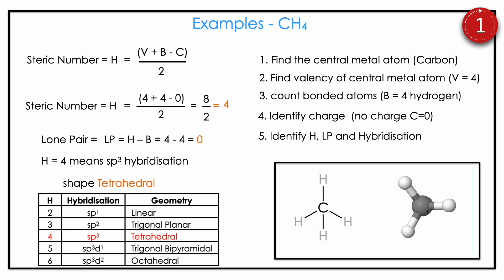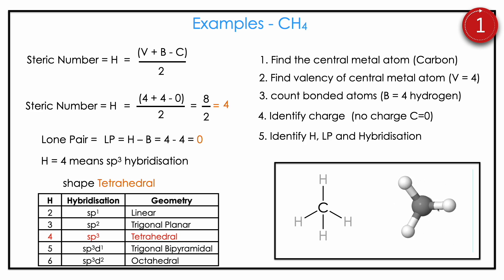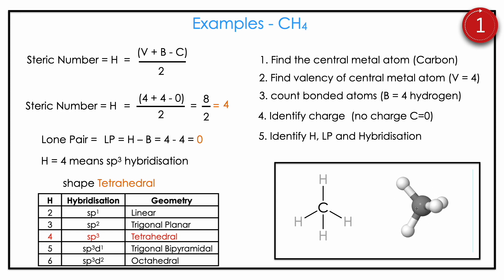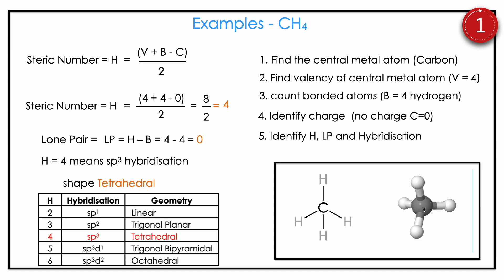Then the well-known example CH4. Carbon is the central metal atom, hydrogen is the bonded atom. Carbon valence is 4, bonded atoms are 4 hydrogens, charge is 0. So H = (4 + 4 − 0) / 2 = 8 / 2 = 4. Lone pair = 4 − 4 = 0. H = 4 means sp3 hybridization, tetrahedral. You might already know this — methane's shape is tetrahedral.